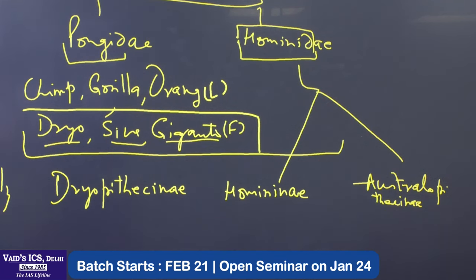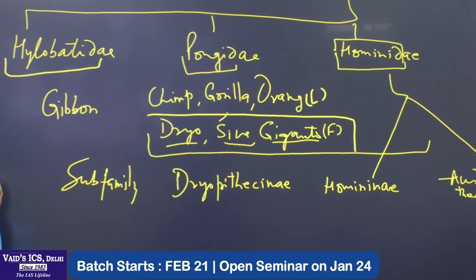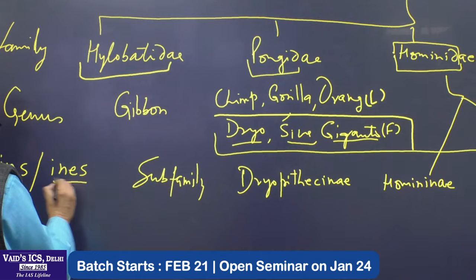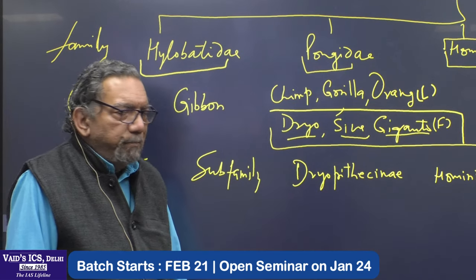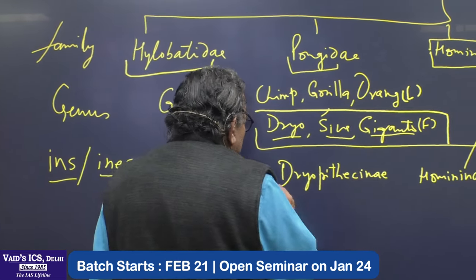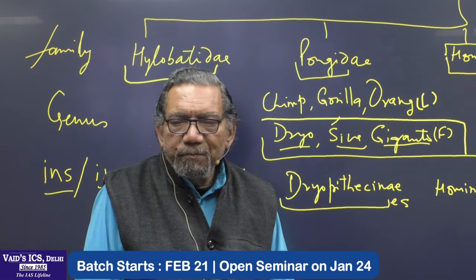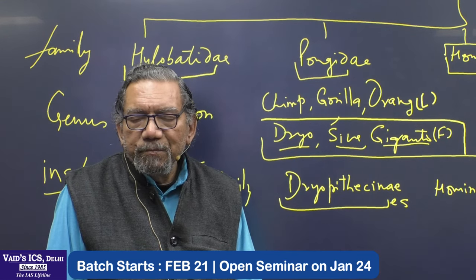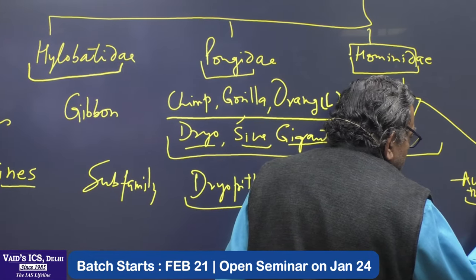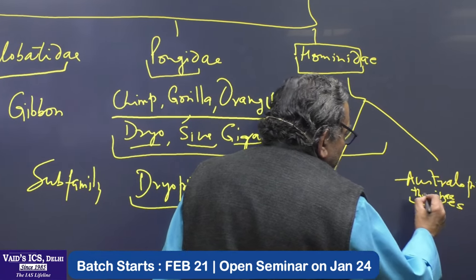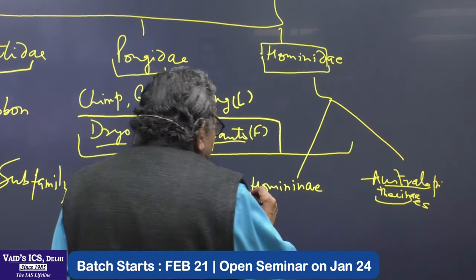Members are called either '-ins' or '-ines'. So they are Dryopithecines, they are Australopithecines, and they are Hominins.